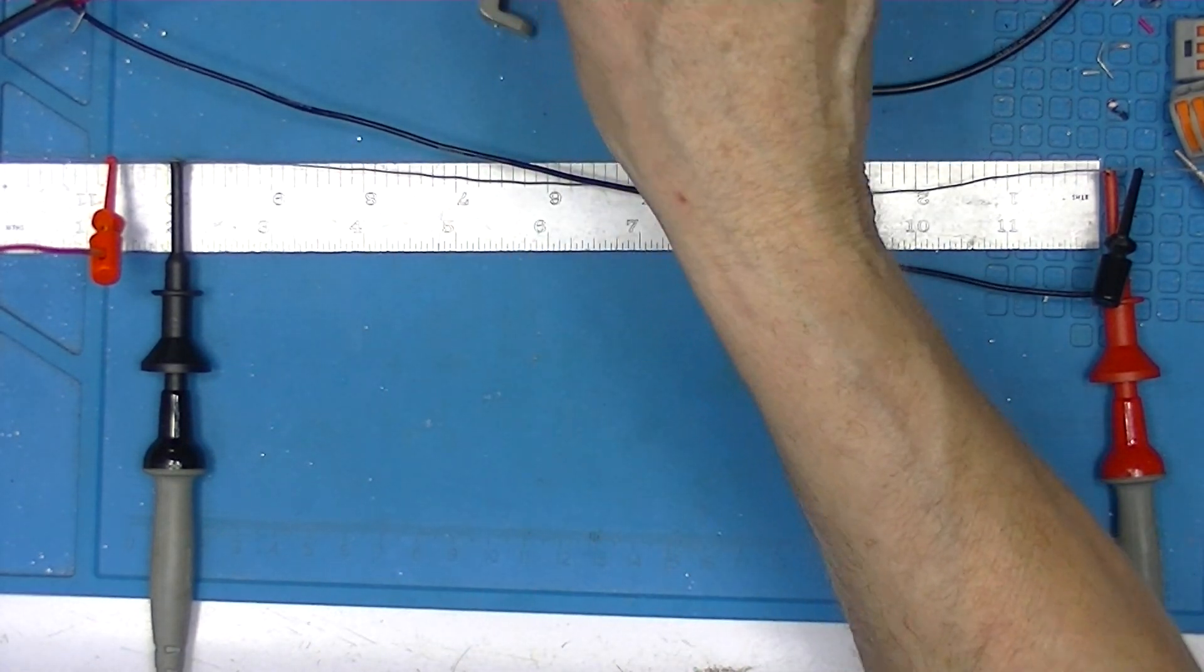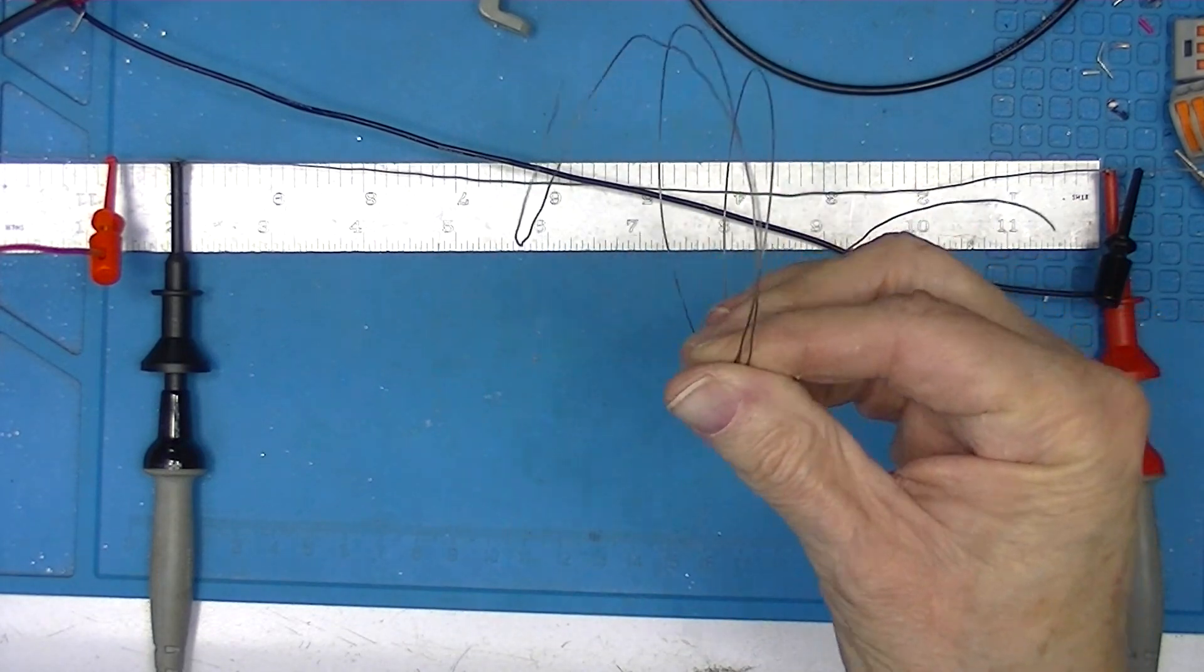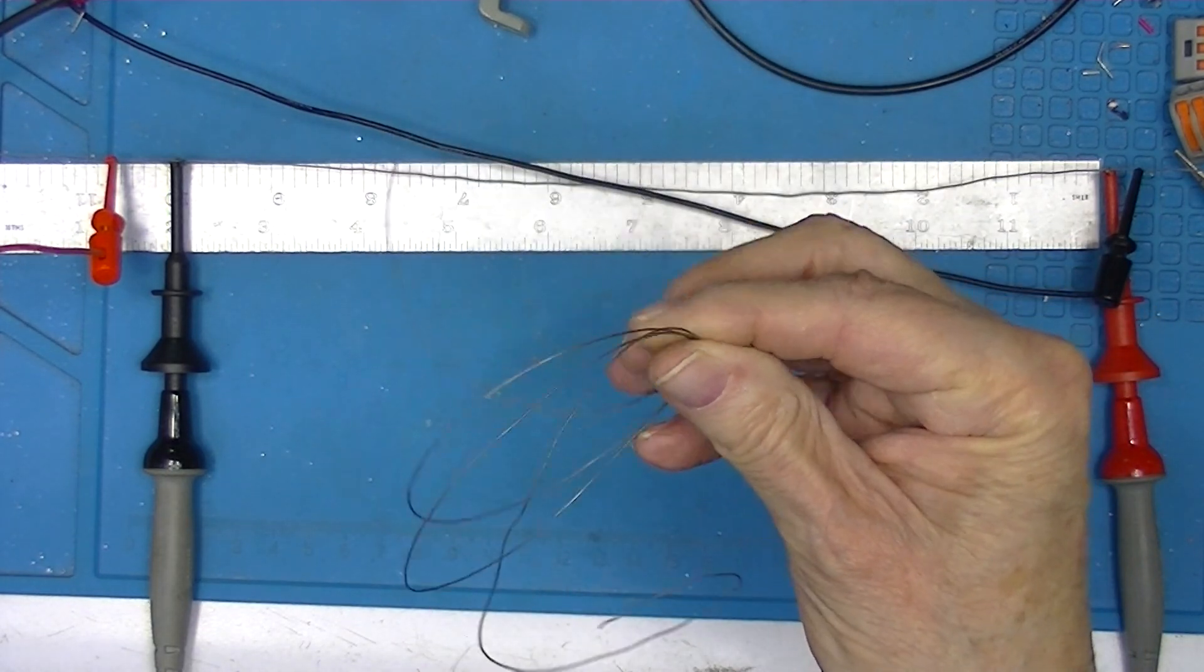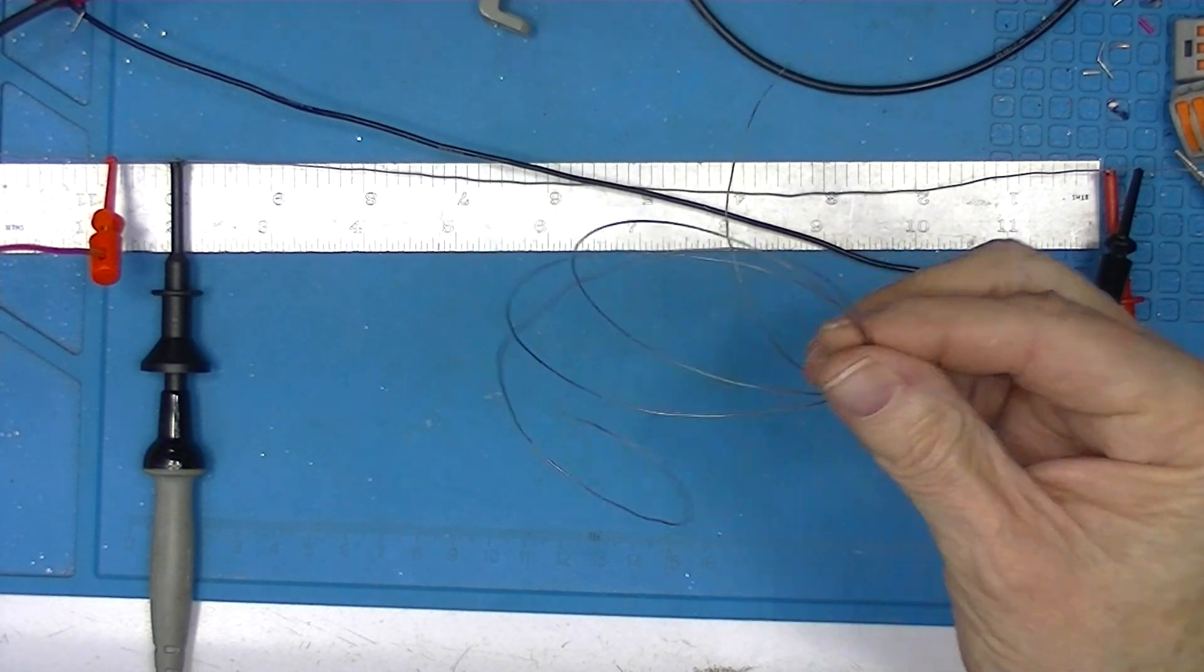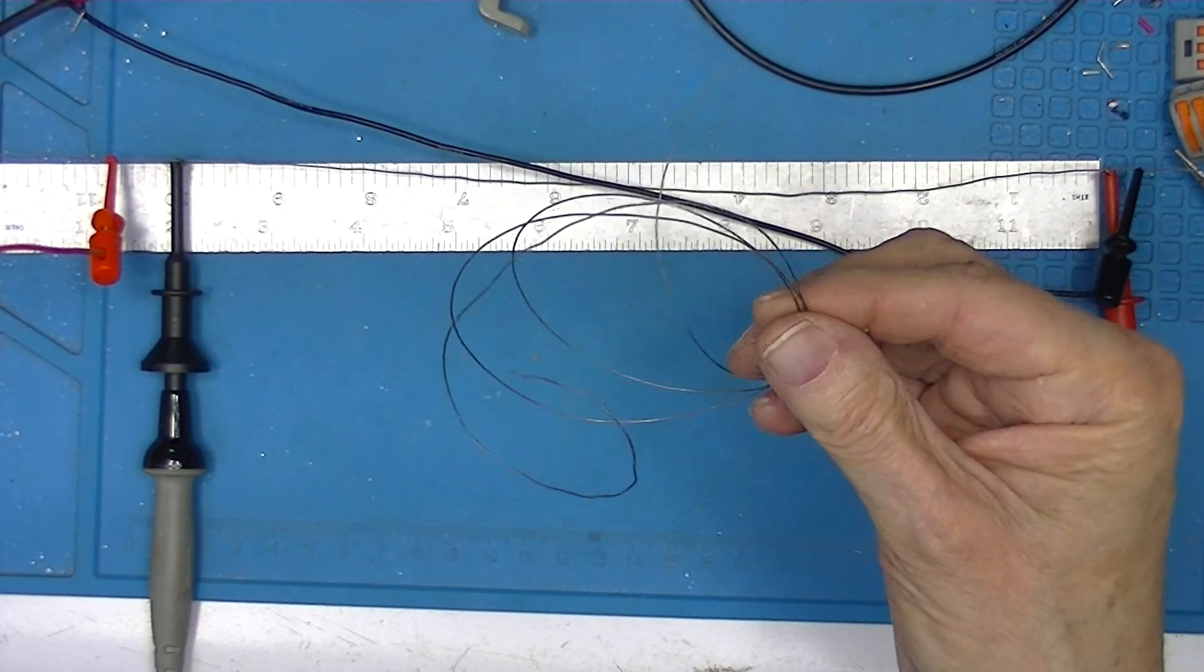So I'll put this in a little envelope and I'll mark it nichrome wire, 0.184 ohms per foot.